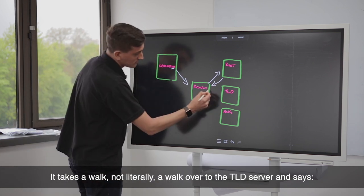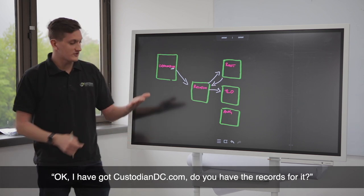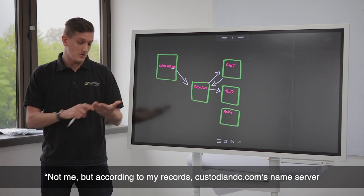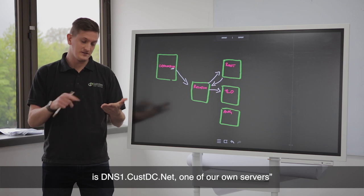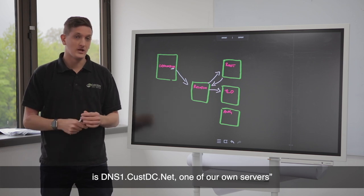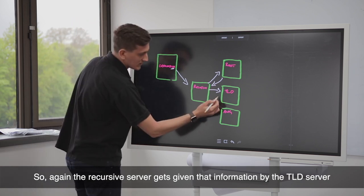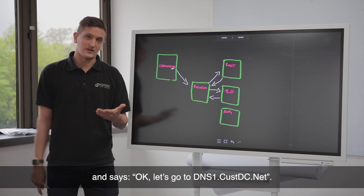It takes a walk, not literally, over to the TLD server and says, okay, I've got custodiandc.com. Do you have the records for it? Not me, but according to my records, custodiandc.com's name server is dns1.cusdc.net. So again, the recursive server gets given that information by the TLD server and goes, okay, let's go to dns1.cusdc.net.